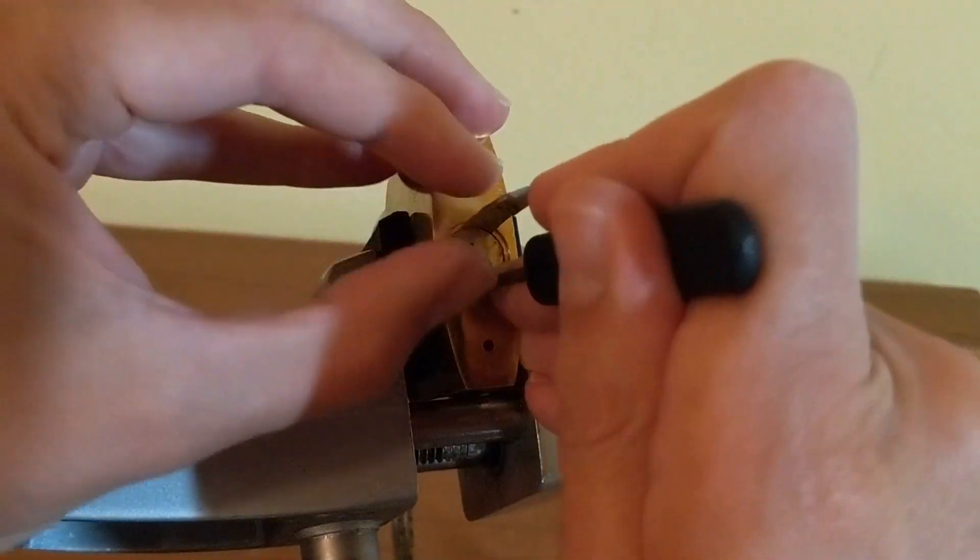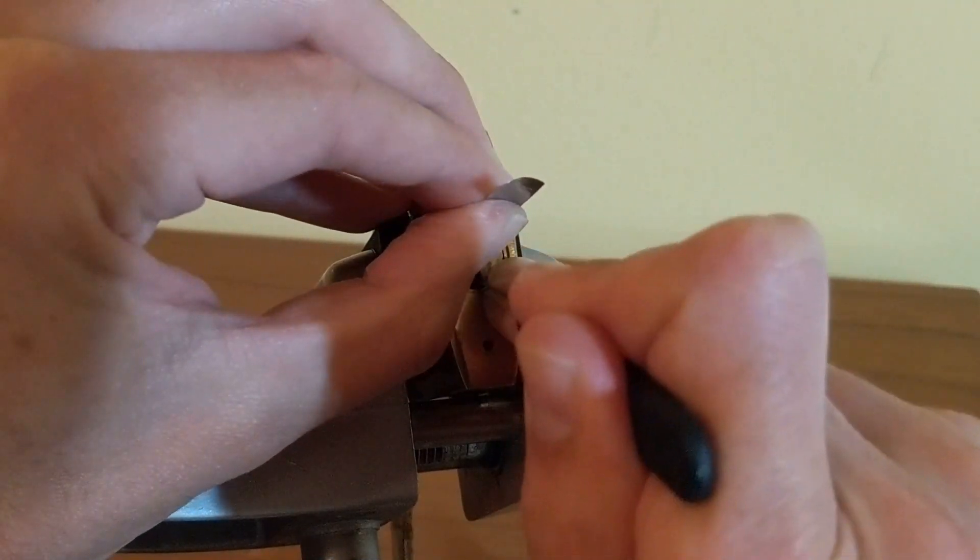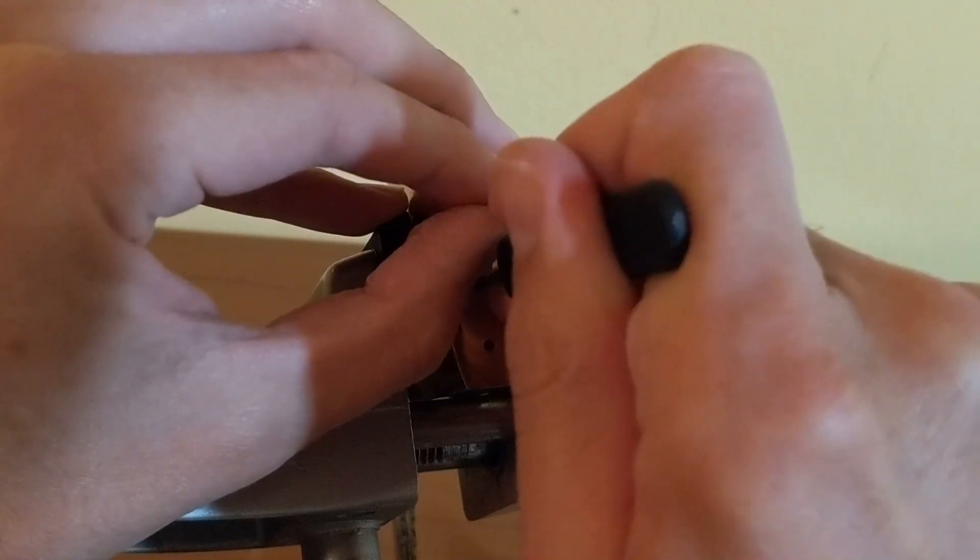With a pick, I was able to raise each key pin to the shear line while continuing to apply forward pressure. When the pins hit the right height, the core shim slides forward and will now bind the next pin.